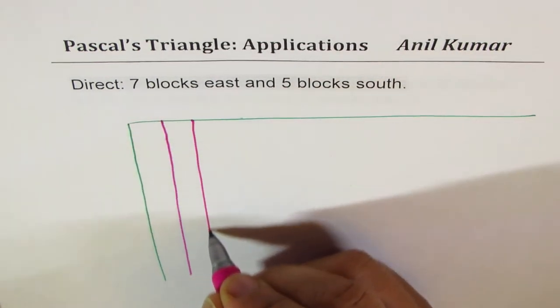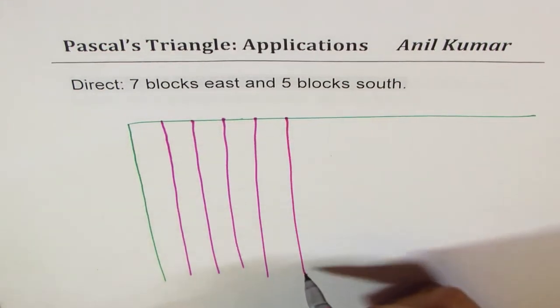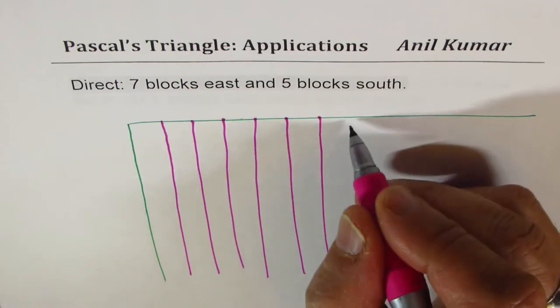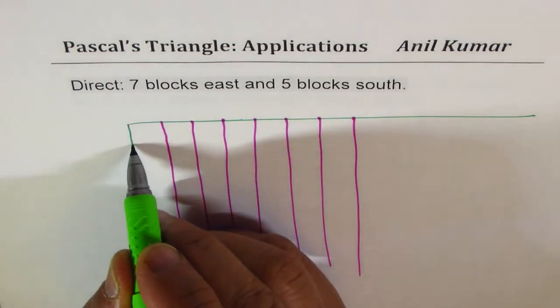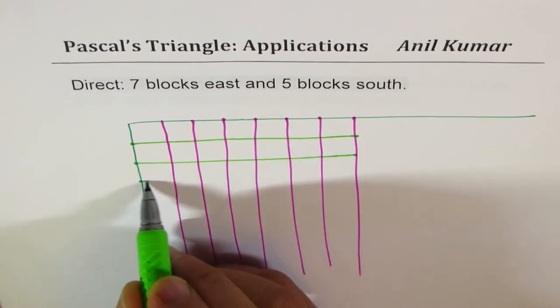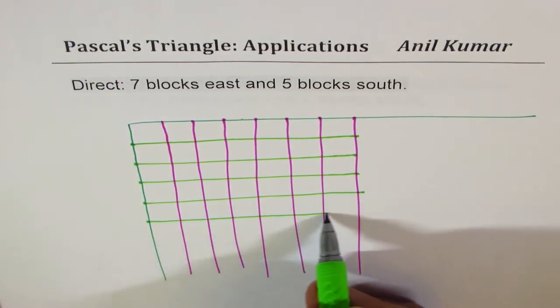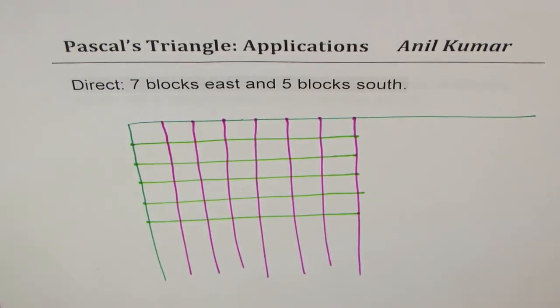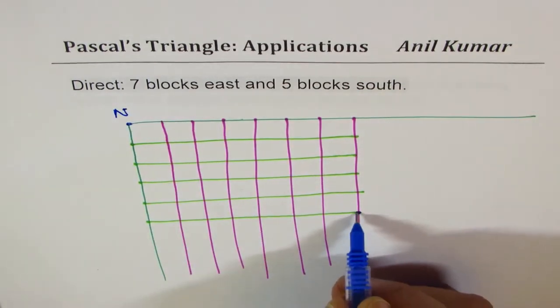One, two, three, four, five, six, and seven. And we'll draw five blocks south. So let's say one, two, three, four, and five. So that gives us the position. Nirvan is starting from here, and Vishu lives there.